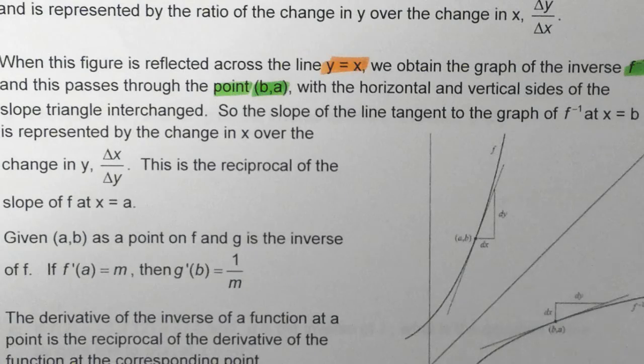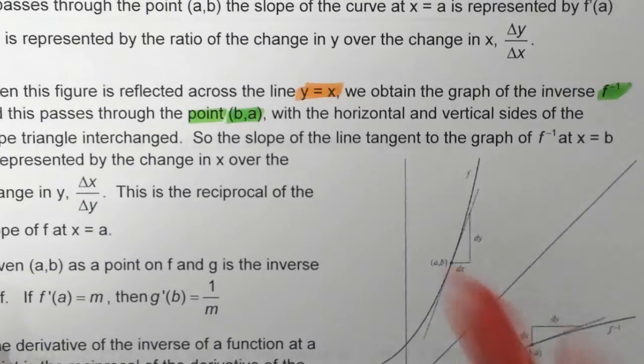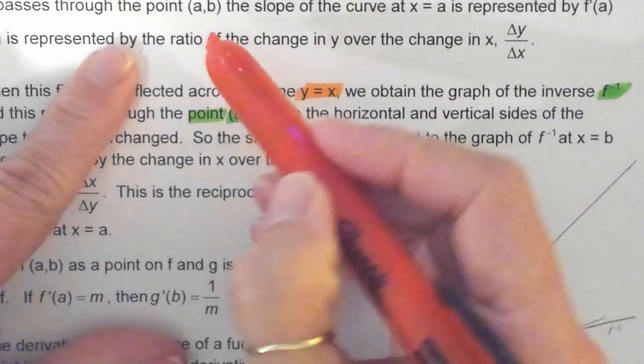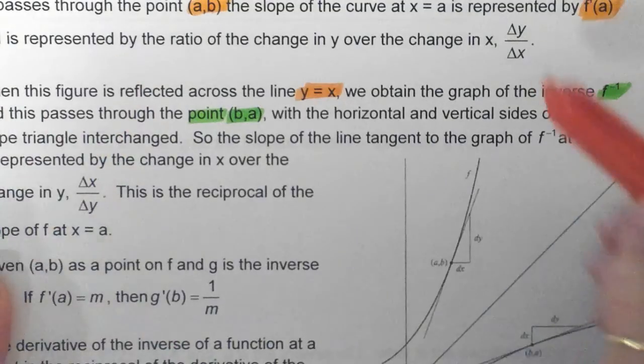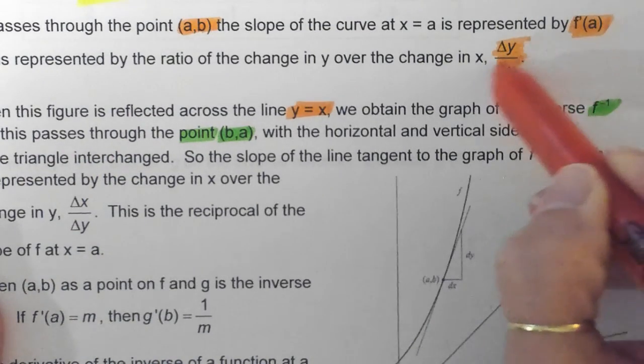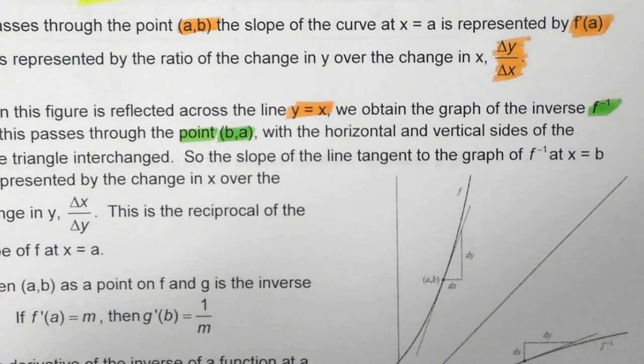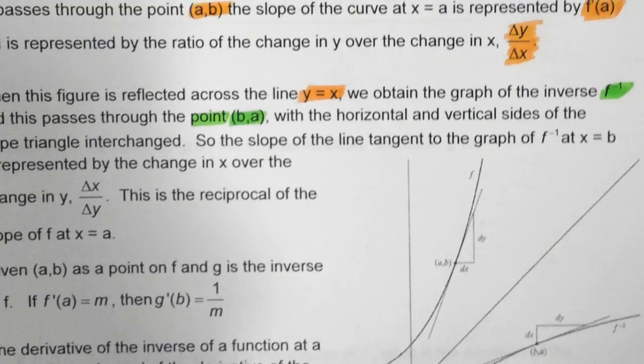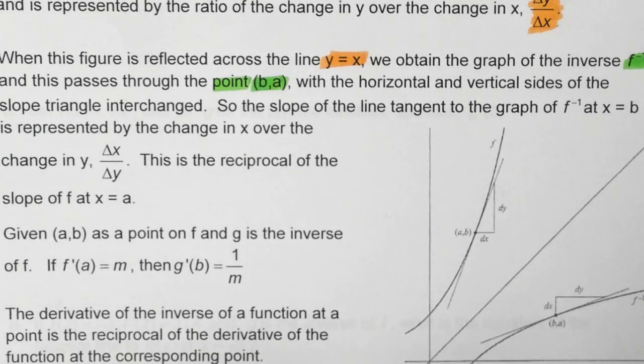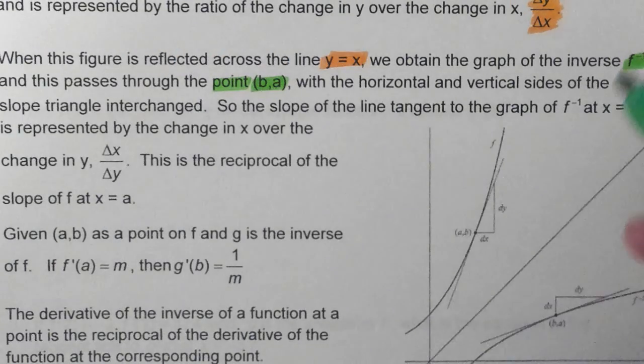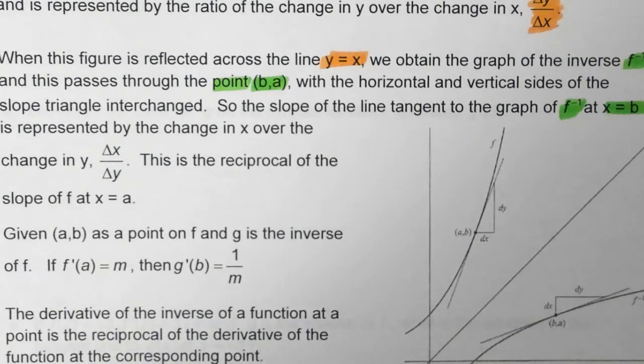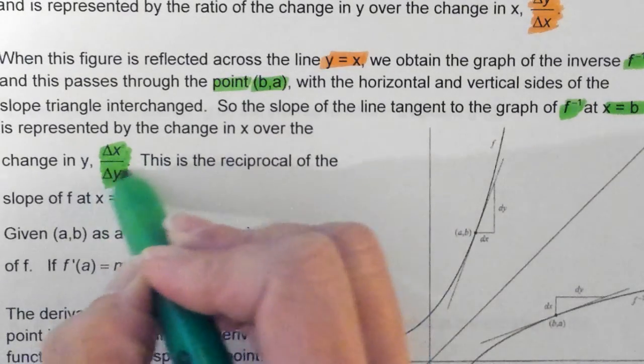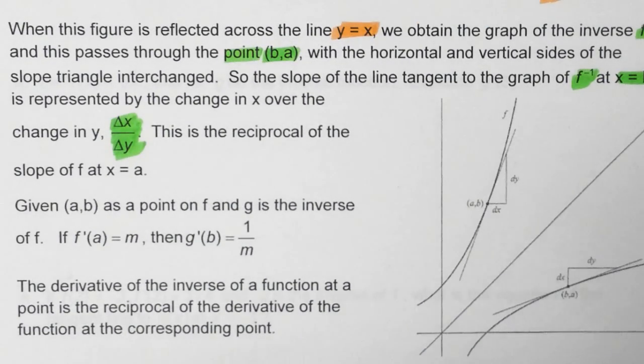If we know that we have the point (a,b) for our function f, and f prime of a is found by finding the change in y over the change in x, if you switch x and y, then the slope of the inverse is going to be located at point b, which is now the x value, by flipping the slope over. So it's just going to be the change in x over the change in y. It is not the negative reciprocal.